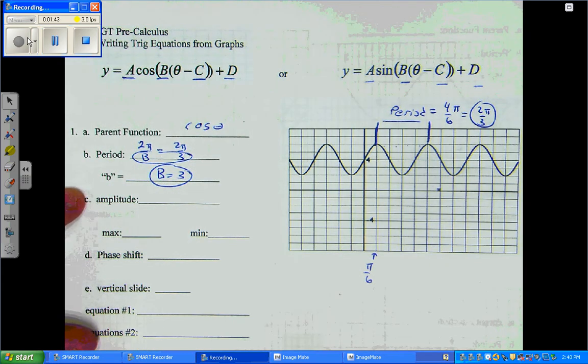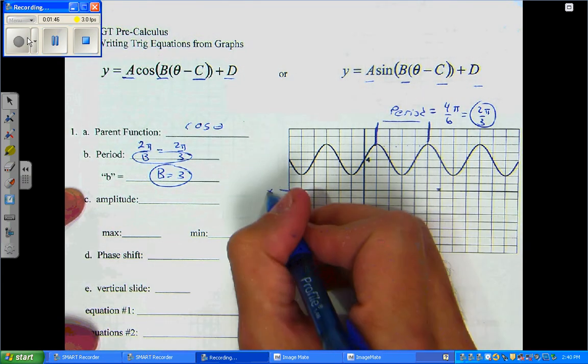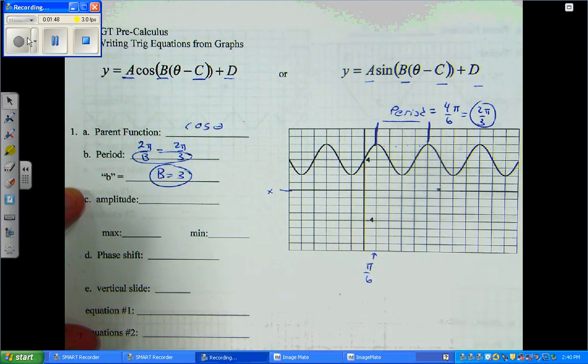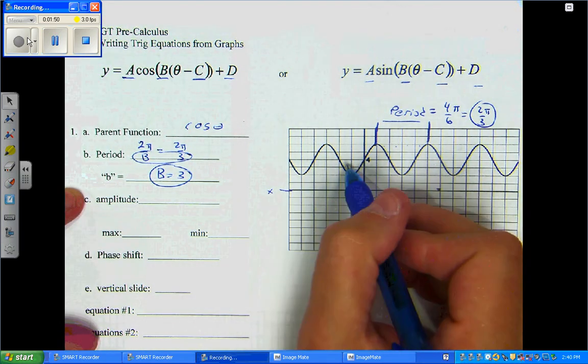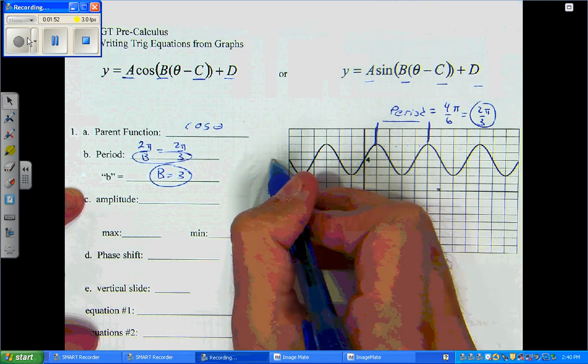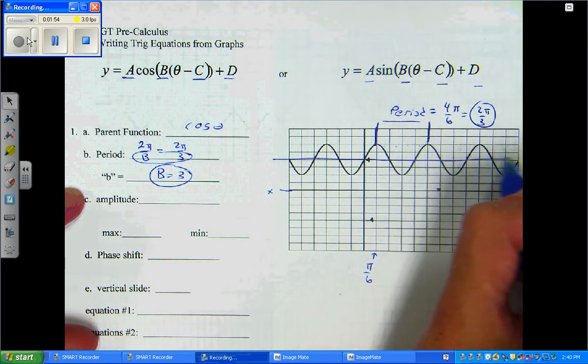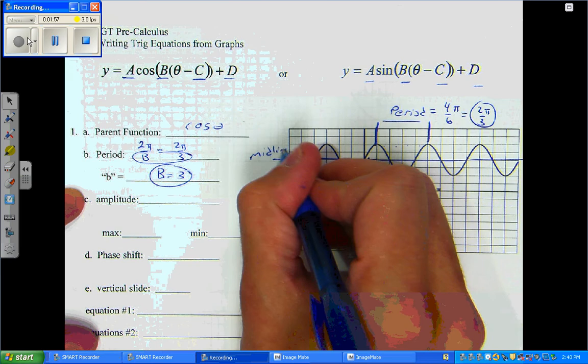To get the amplitude, we're going to graph the midline. This looks like it's my x-axis right here. To get the midline, it's the one that's in the middle of our function. It looks like it's right here. There's our midline.